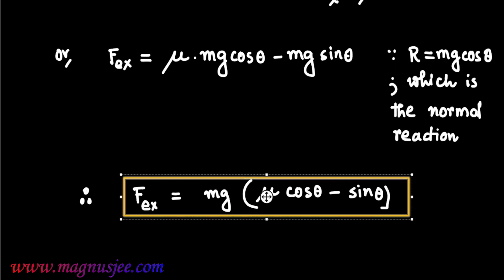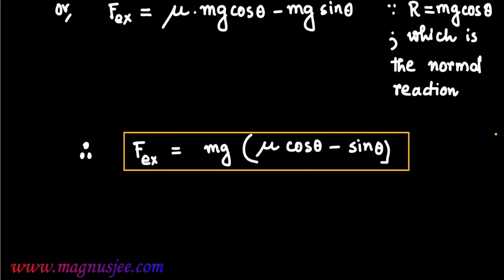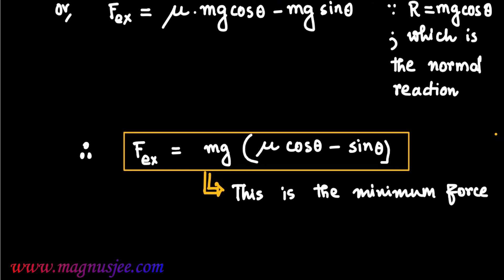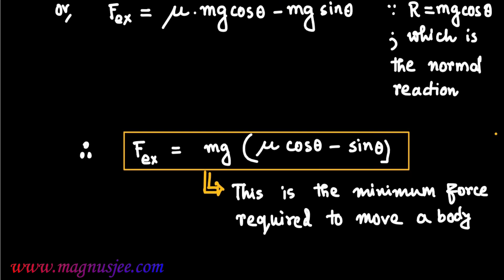We get the expression for the minimum force required to move a body down the inclined plane: FEX equals Mg(mu cos theta minus sin theta), provided theta is less than theta_R. This is the minimum force required to move a body down the rough inclined plane.